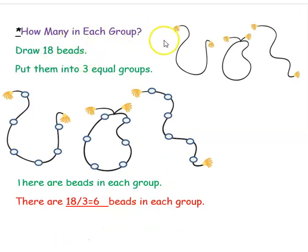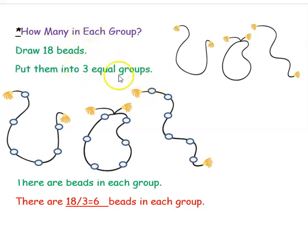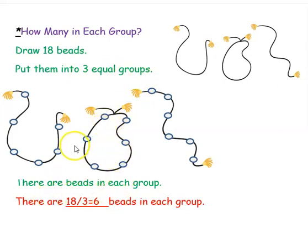How many in each group? Draw 18 beads and put them into 3 equal groups. We have drawn 18 stars and put them into 2 equal groups; now we have 18 beads and have to put them into 3 equal groups. There are 18 beads and we have to put them into 3 equal groups. So 18 divided by 3 is 6. Each group will have 6 beads.